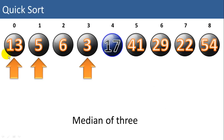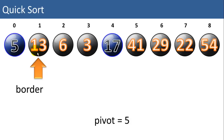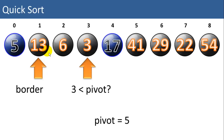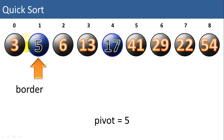Now let's look at the left partition. Again, we'll take the median of 3 — the first, the last, and the middle value — and choose the median of those, which is 5. We're going to swap it into the first position, then start looking at 13. Our border value is 13. We compare 6 to the pivot — is 6 less than the pivot? No. Is 3 less than the pivot? Yes, so we swap 3 and 13. Now we swap 5 into the border position. There's only one item left to the left of the border. We would also do a recursive call on the two items to the right of the border to sort those.